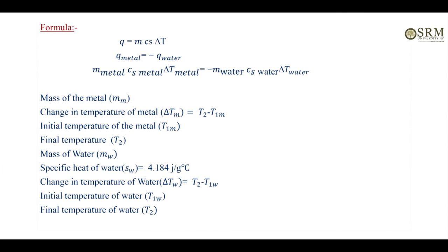For Q metal, the formula is mass times specific heat times delta T — that is, mass of the metal times specific heat of the metal times change in temperature of the metal — equals negative Q water, which is M water times specific heat of water times change in temperature of water. So we need to find the specific heat of the metal: Cs_metal equals negative M water times Cs_water times delta T_water, divided by mass of the metal times change in temperature of the metal.